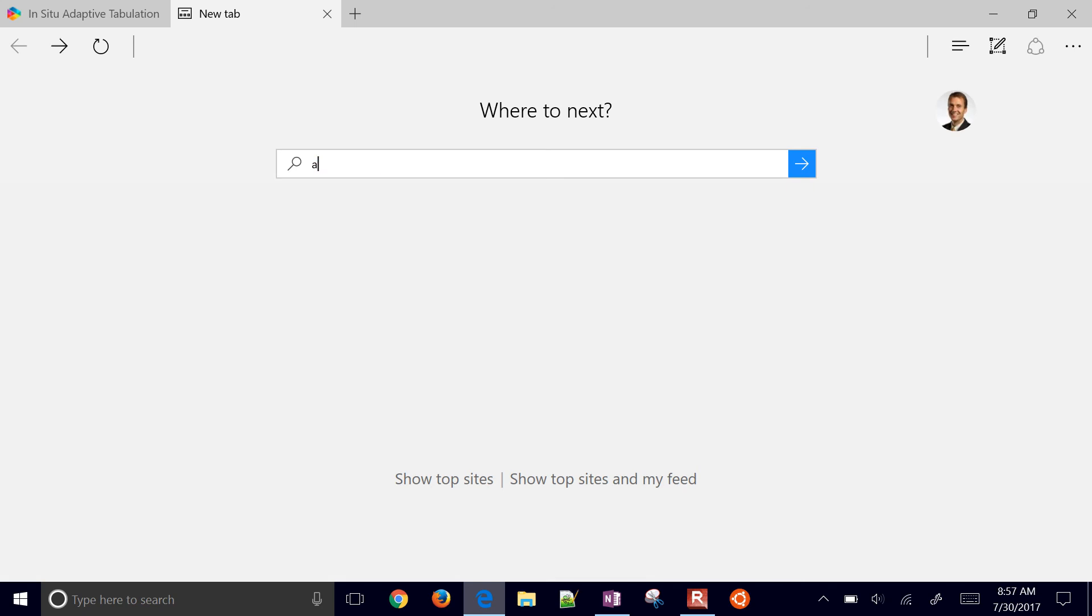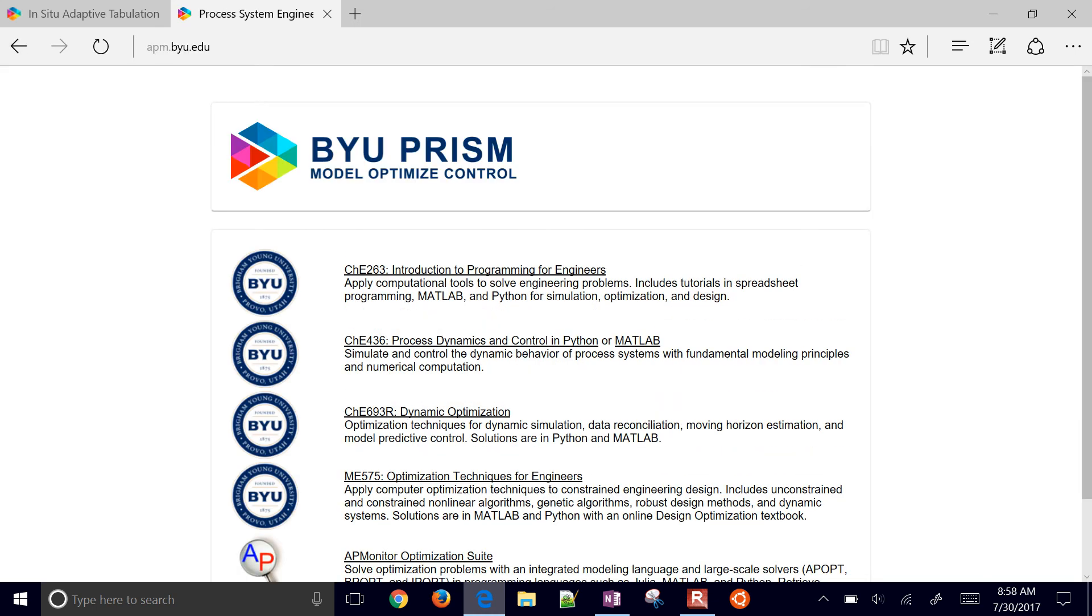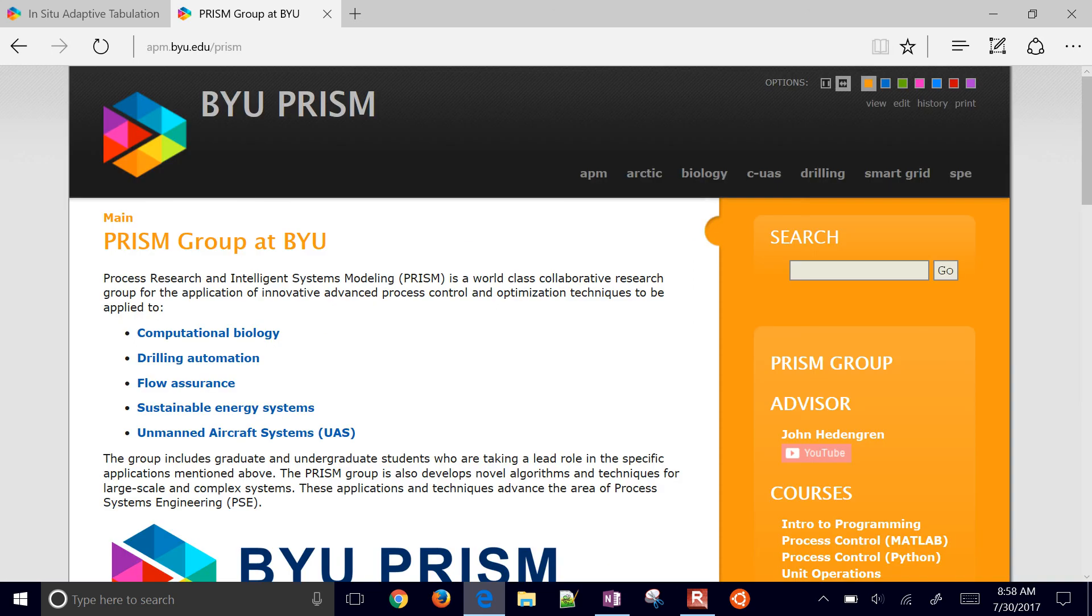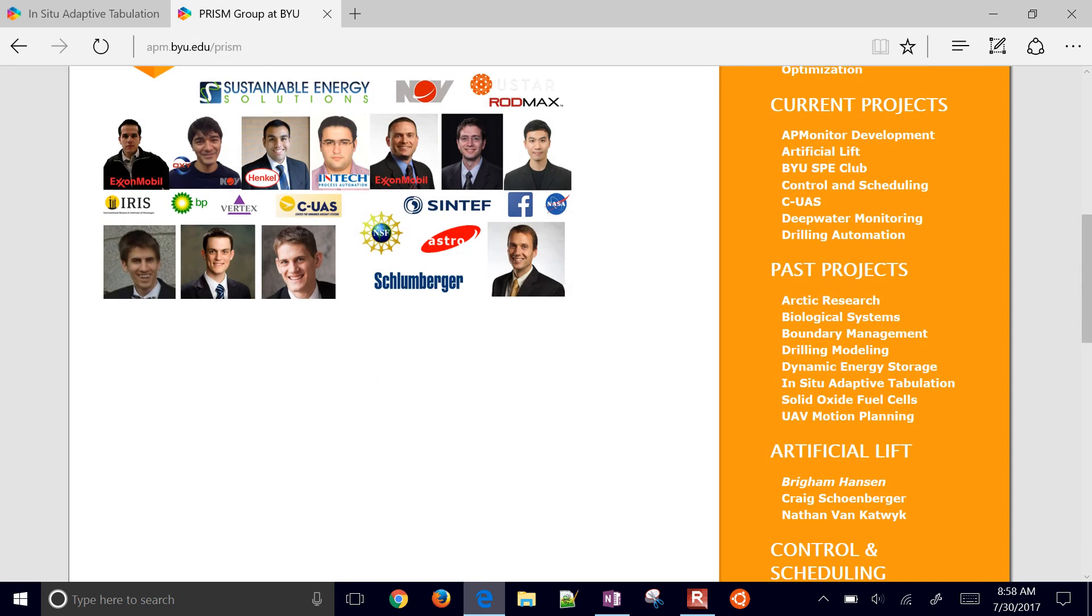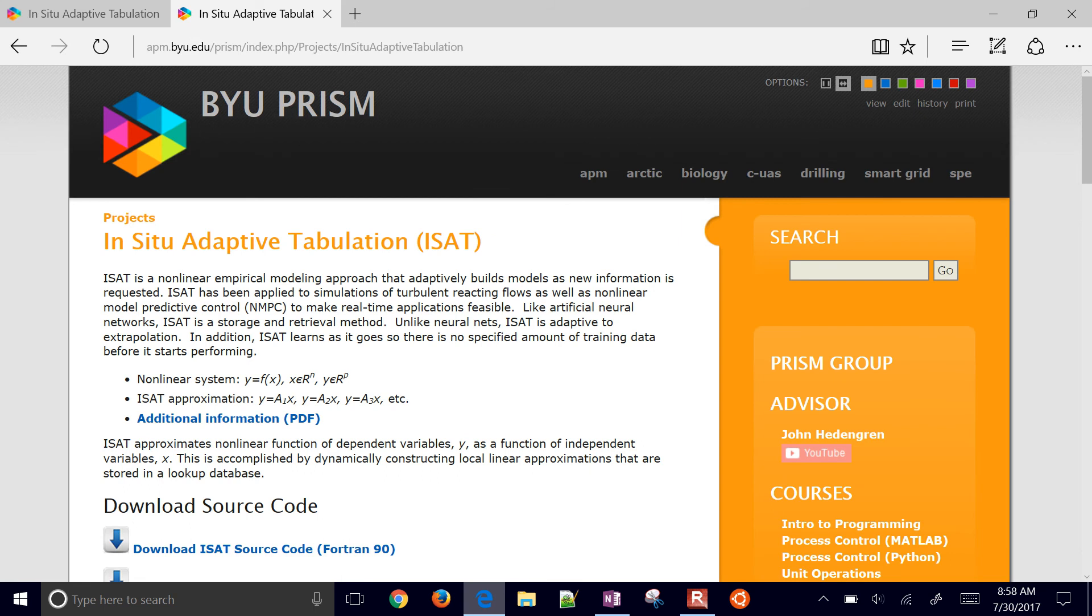Just go to apm.byu.edu and then select the prism link up top. And then that's going to bring you to the research website. And here under past projects, this is in situ adaptive tabulation.